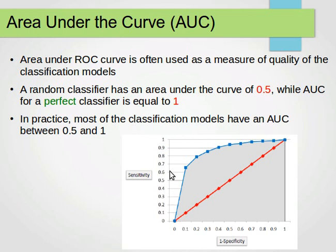It goes through the 0 and 1 point. In practice, most of the classification models have an area under the curve between 0.5 and 1. As we said, we want our curve to go towards the top left as much as we can. I just want to make sure that the idea is clear.